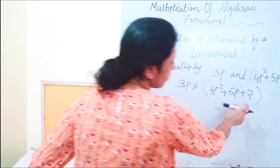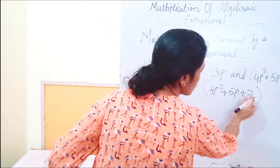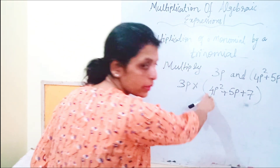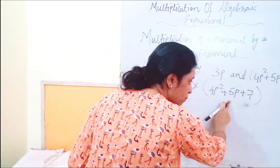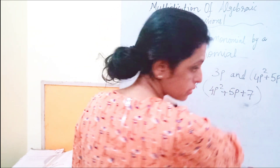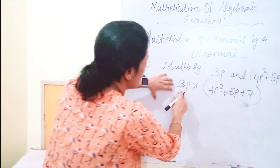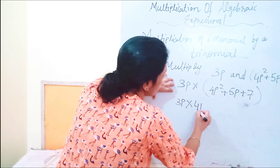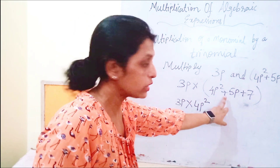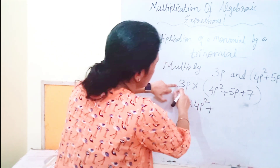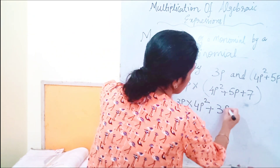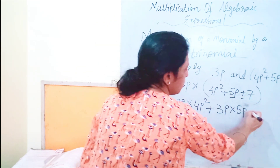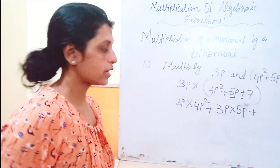This trinomial has 3 terms. Now 3p will be multiplied with 4p squared, with 5p, and also with the constant 7. So we write: 3p multiplied by 4p squared, plus 3p multiplied by 5p, plus 3p multiplied by 7.